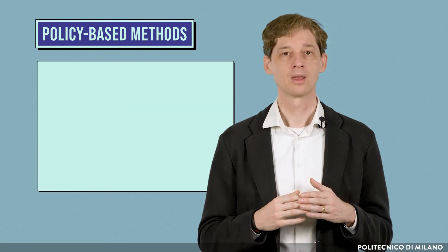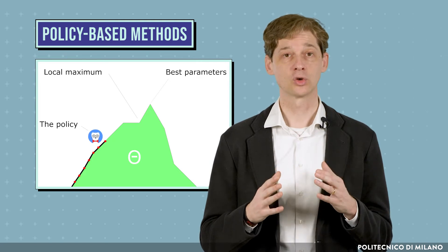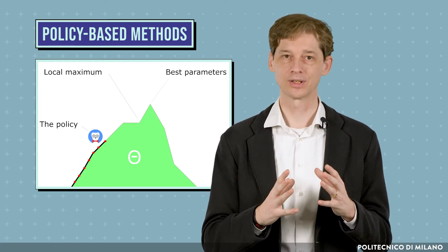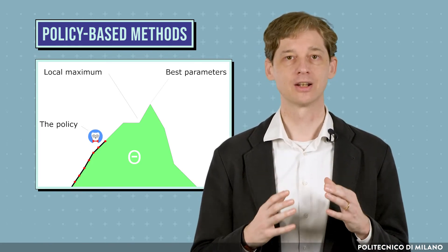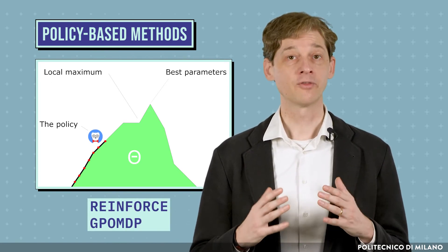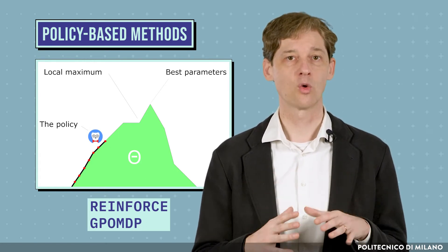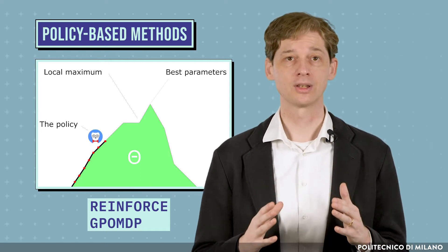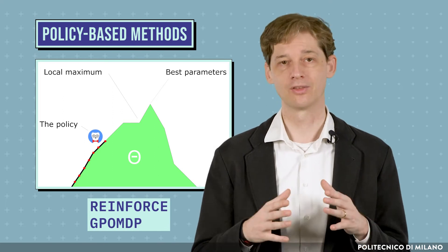The second category for the classification of reinforcement learning techniques is policy-based methods. Here, the idea is to define a space of parametric policies and then search for the parameters that achieve the best performance. The most popular algorithms in this category are the policy gradient methods, such as REINFORCE and GPOMDP. Starting from an initial policy, policy gradient methods perform a gradient ascent optimization over the policy parameters, where the gradient direction is estimated through trajectories generated by executing the current policy in the environment.